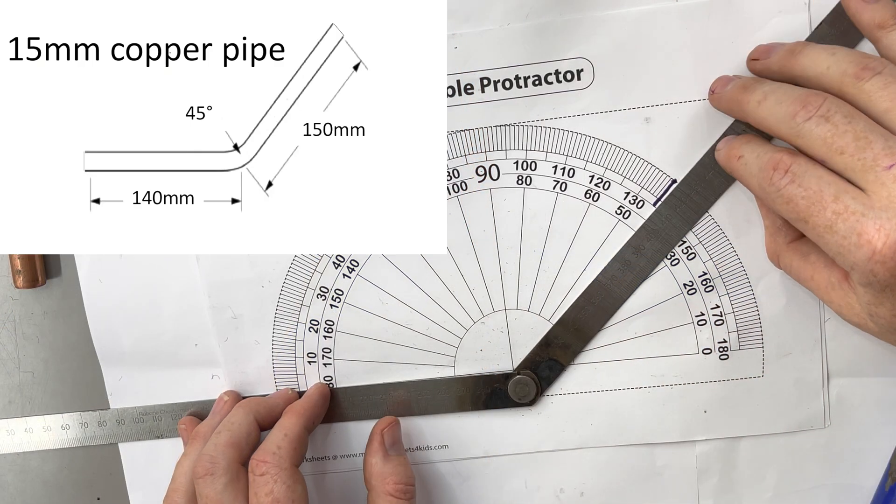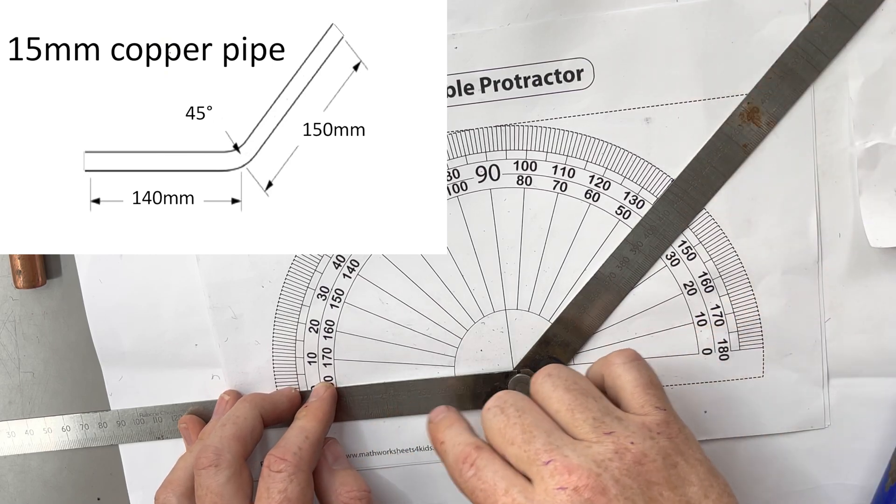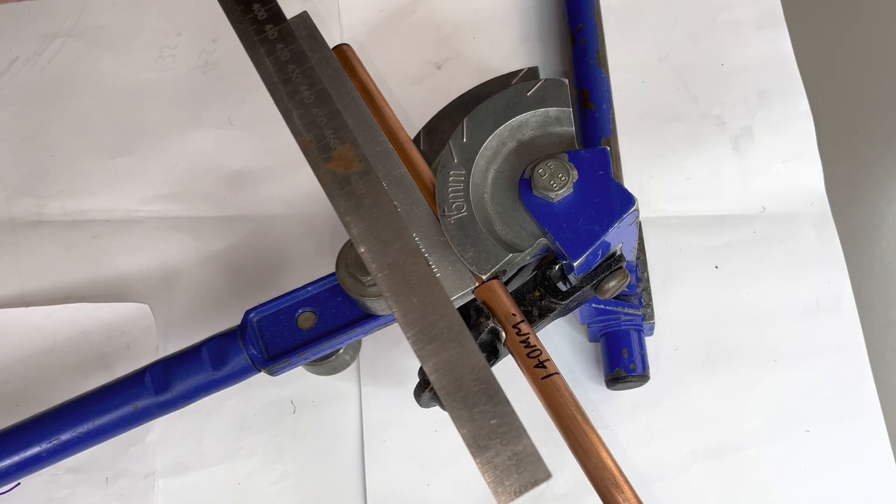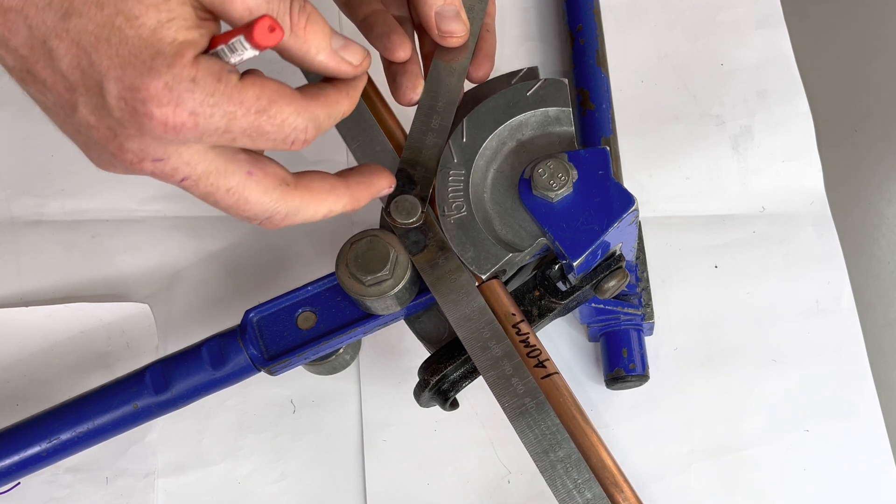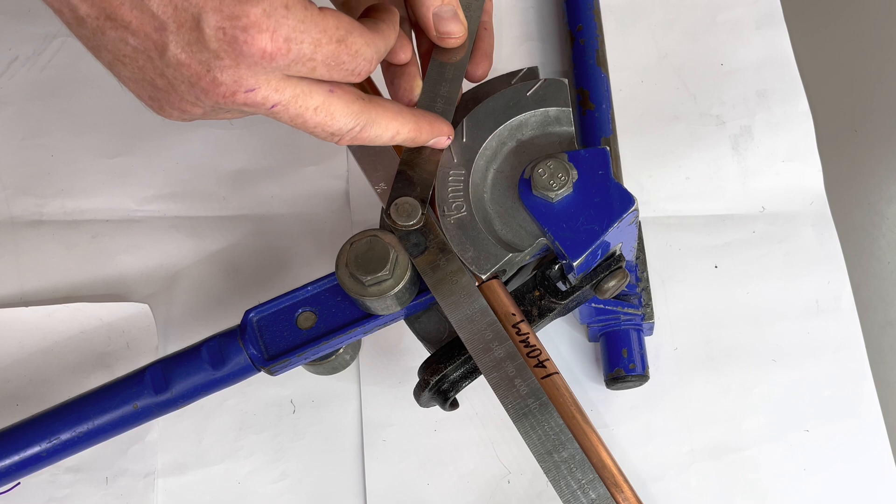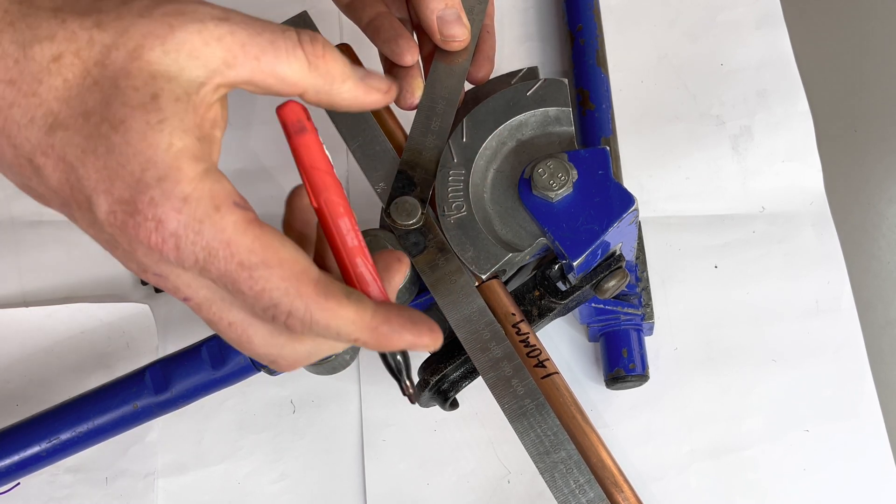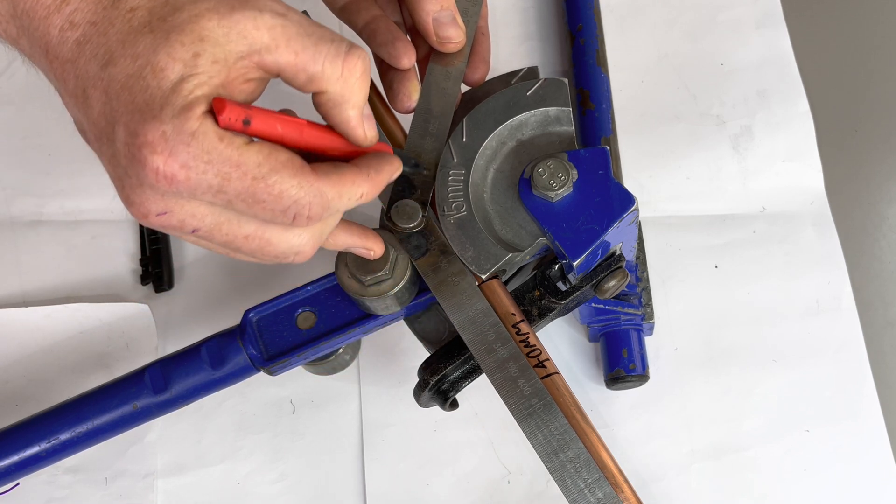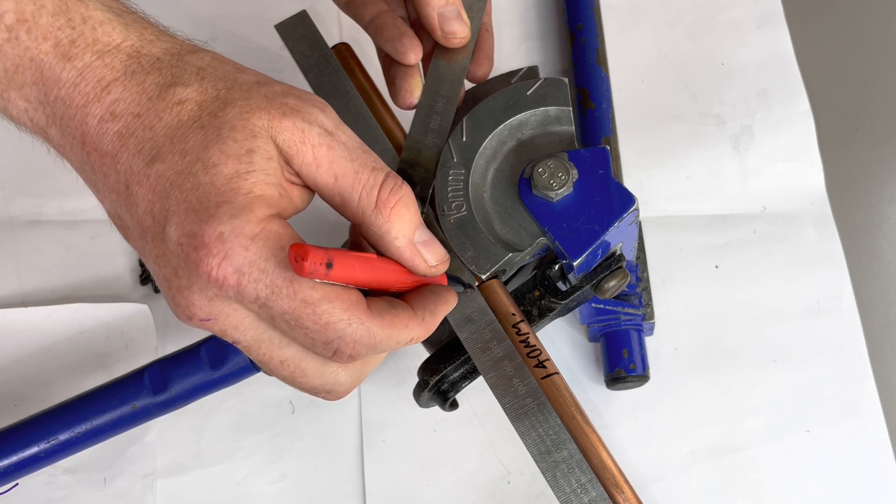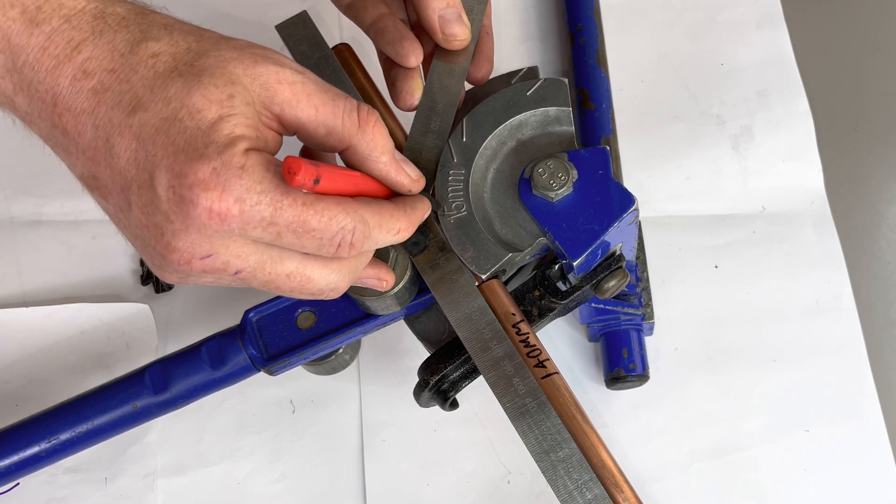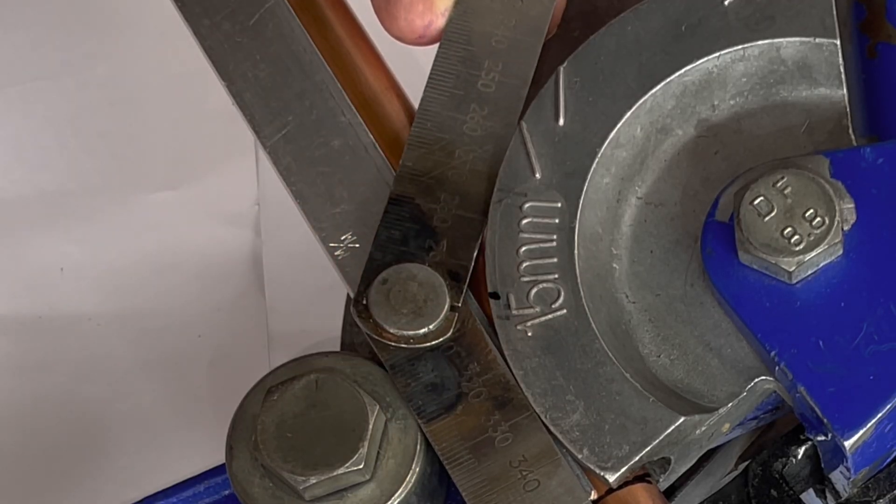Okay, using the folding ruler, set the angle to 45 degrees. Make sure it touches both sides of the former and it's also parallel with the pipe. So touching the former, touching the former, and parallel, which is here. And we then do a mark. This mark is the center of a 45 degree bend.